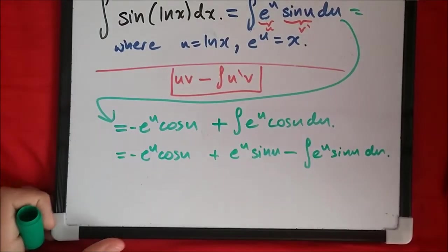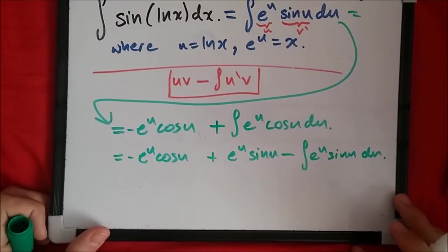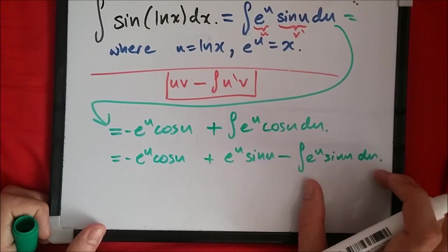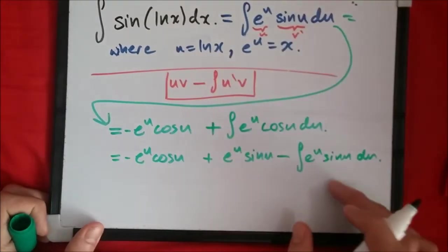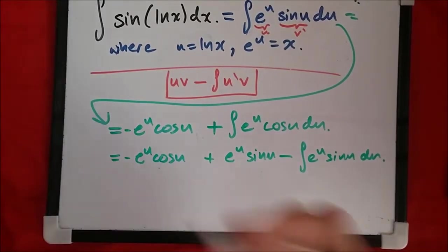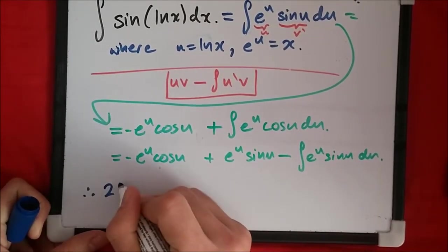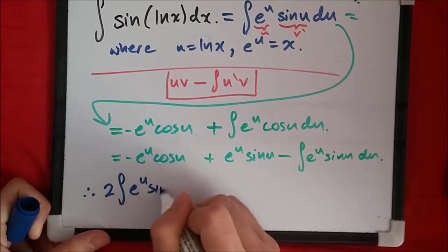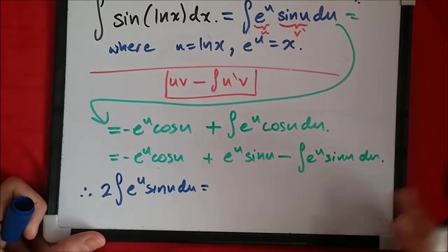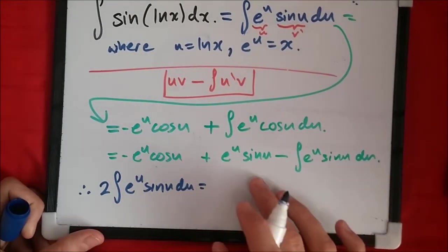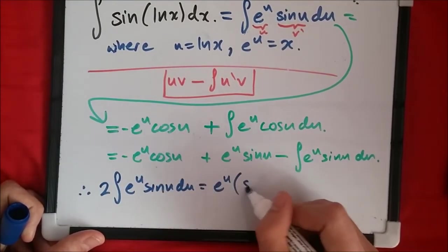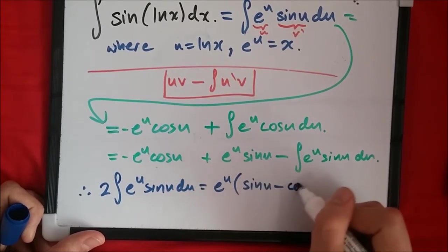If you notice something, the right hand term equals the left hand term. We can collect like terms. If I plus this across, the left hand side would be 2 times the integral of e to the u sine u du. This equals the right hand side, which is e to the u times sine u minus cosine u.